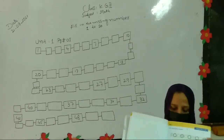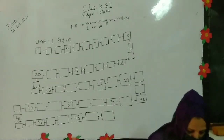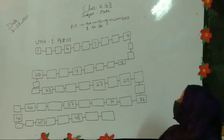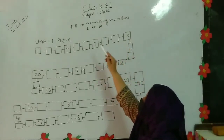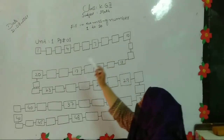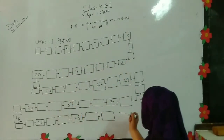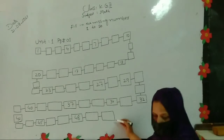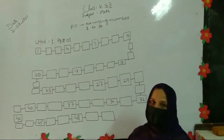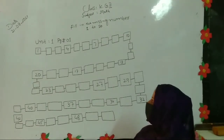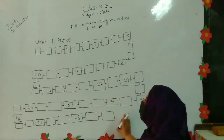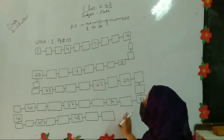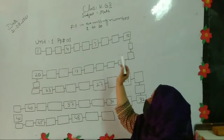Look at the book. Fill in the missing numbers 1 to 50. We will start with numbers — counting in KG1 class. We will fill the gaps.